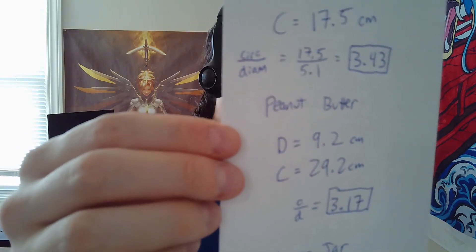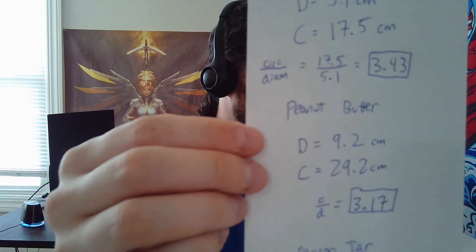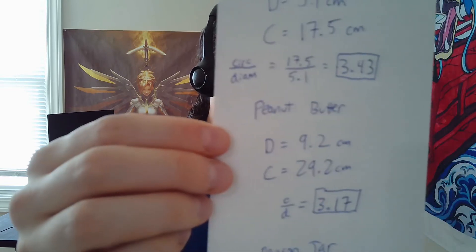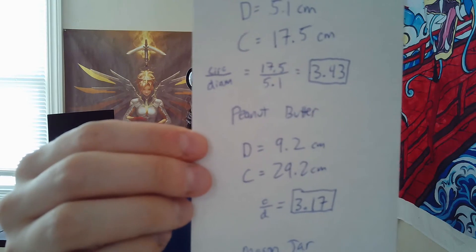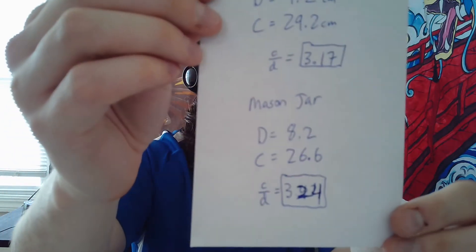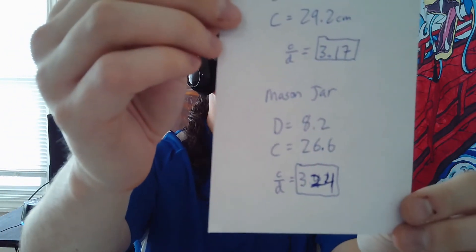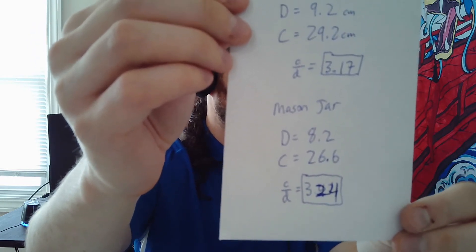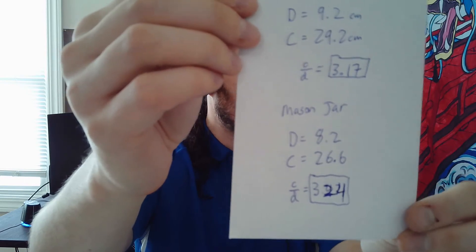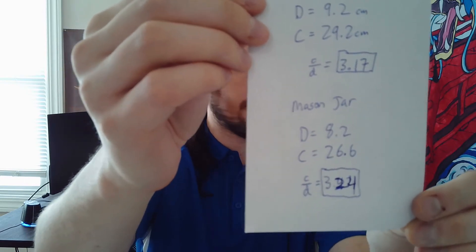For peanut butter, my diameter was 9.2 centimeters. My circumference was 29.2 centimeters. So my ratio was 3.17. And for the mason jar, sorry for the scribble, my diameter was 8.2 centimeters. My circumference was 26.6 centimeters. So my ratio was 3.24.